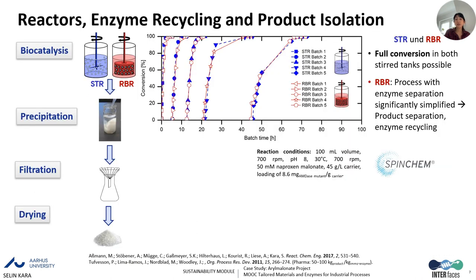Next, we used the immobilized cell lysate in repetitive batch experiments. In batch number one, we observed full conversion of naproxene malonate to S-naproxene in less than six hours. After the first batch, we took out the immobilized enzyme, stored it in the fridge, and ran the second batch the next day with fresh substrate. We did the same for the third, fourth day, and after five consecutive batches, we always observed full conversion. The reaction slowed down, but still achieved full conversion to S-naproxene, both in the stirred tank reactor and rotating bed reactor.